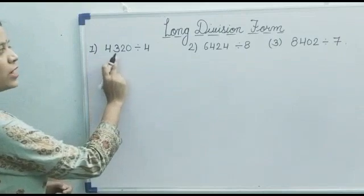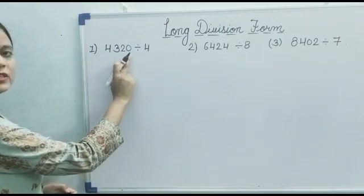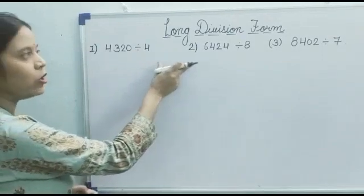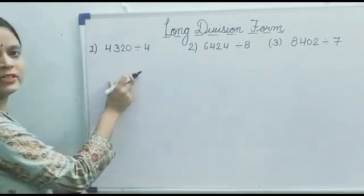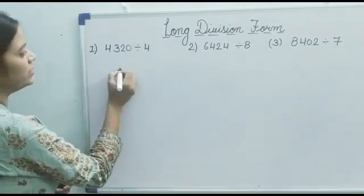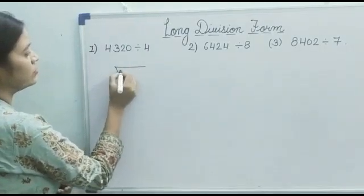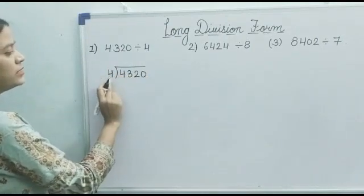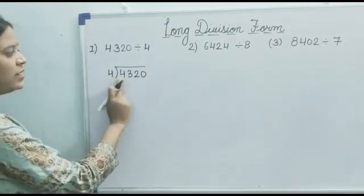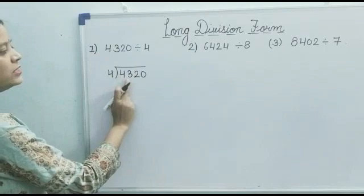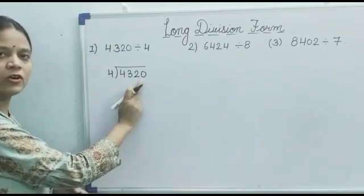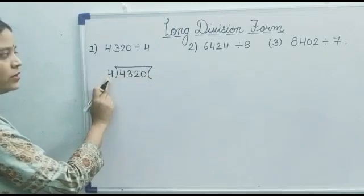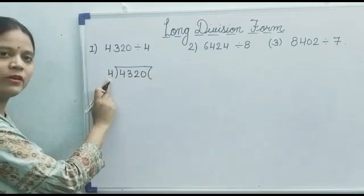The first number is 4320 divided by 4, and we are doing this by long division form. So we need to write in this format. 4 outside is called the divisor, and 4320 is called the dividend. Here 4 is the divisor, so we use the table of 4.